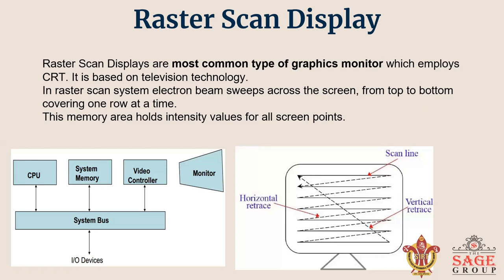This memory area holds the set of intensity values for the screen points. The intensity values are retrieved from the refresh buffer and painted on the screen one row — or scan line — at a time, as shown in this figure.